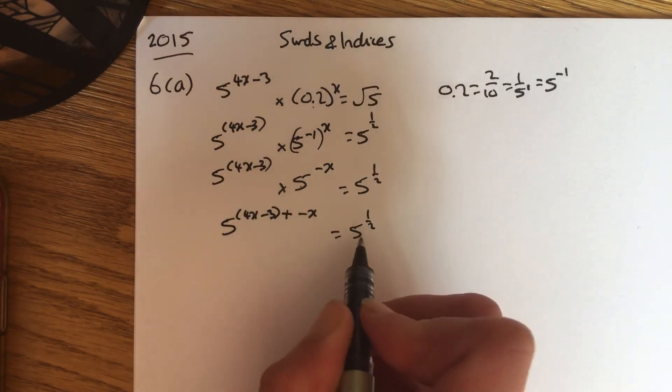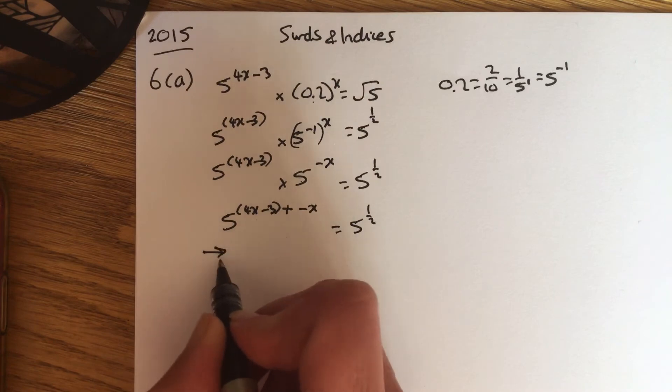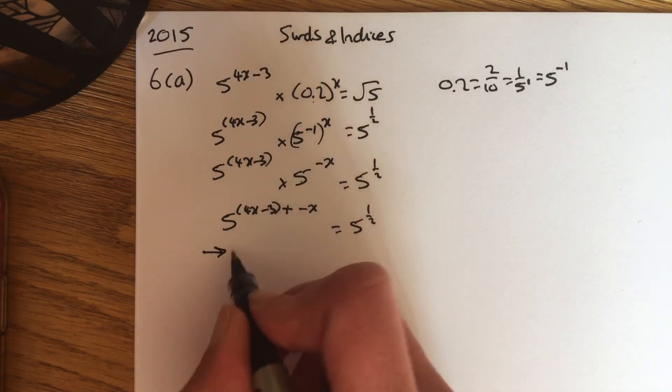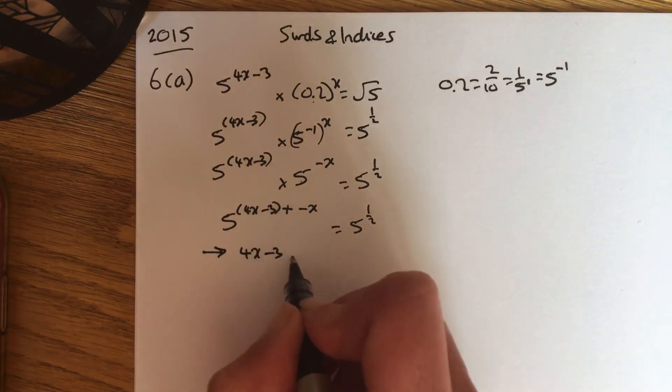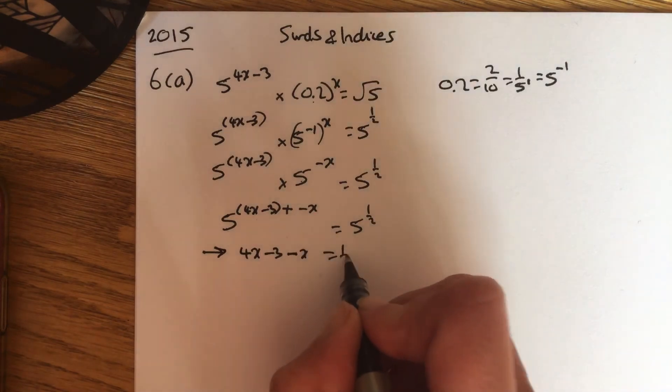Now you've got a base of 5 on each side, you can just ignore that and concentrate on the powers. So this top line here is 4x minus 3 minus x equals a half.